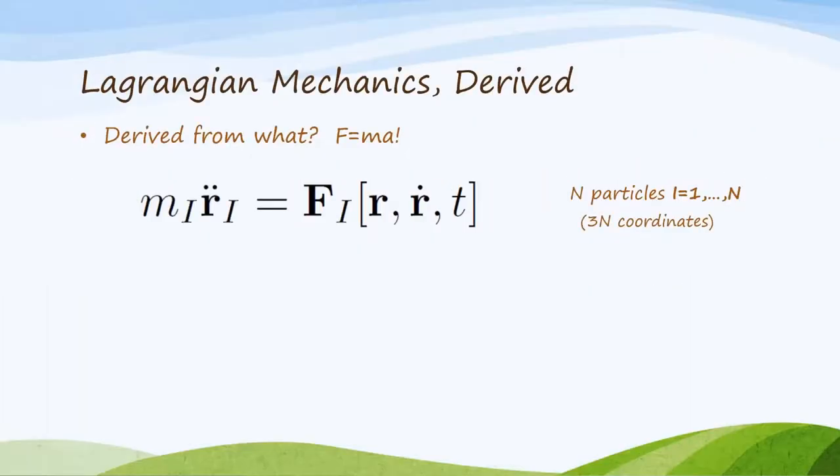Anytime anyone says derived, you should ask that person, from what? You have to start somewhere, and in this video I'm going to start from the very beginning. Force equals mass times acceleration. So I have n particles, could be 2, could be 10,000, for a total of 3n Cartesian positions. And all I'm going to assume is that somebody has told me the forces, the force acting on the i-th particle, denoted F sub capital I.